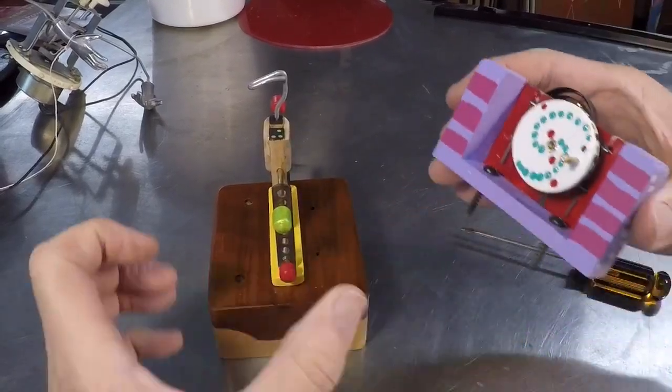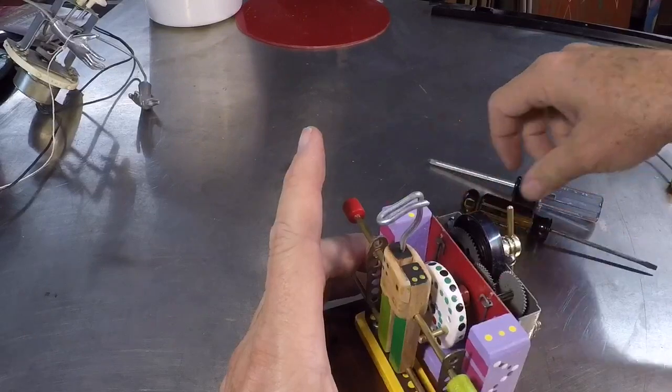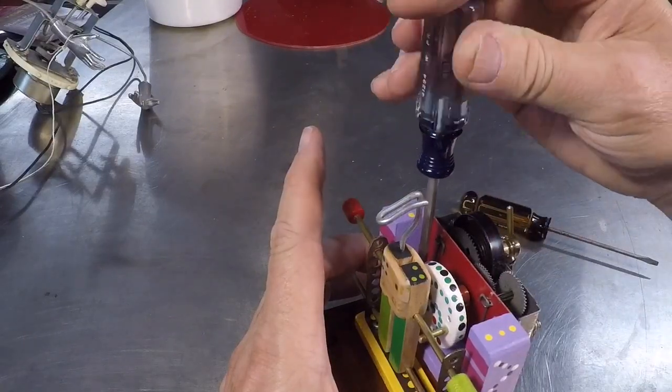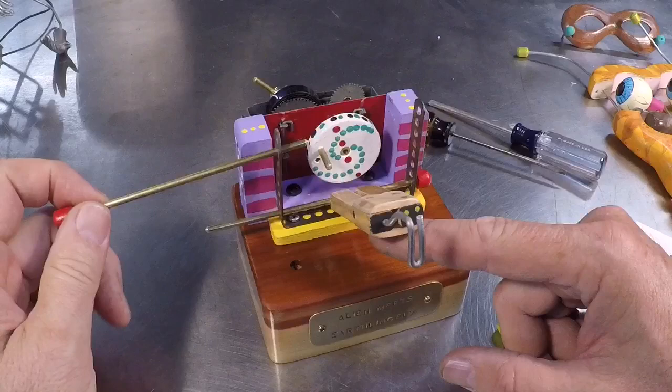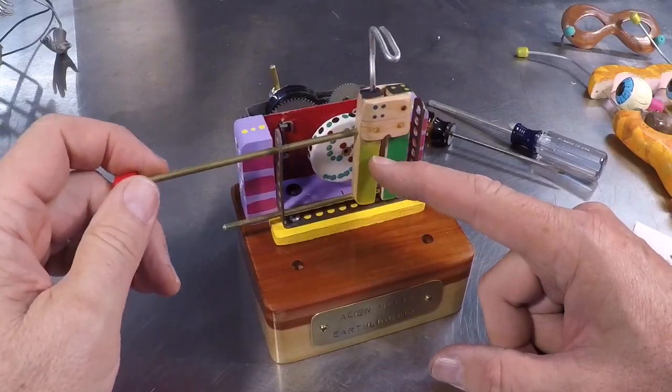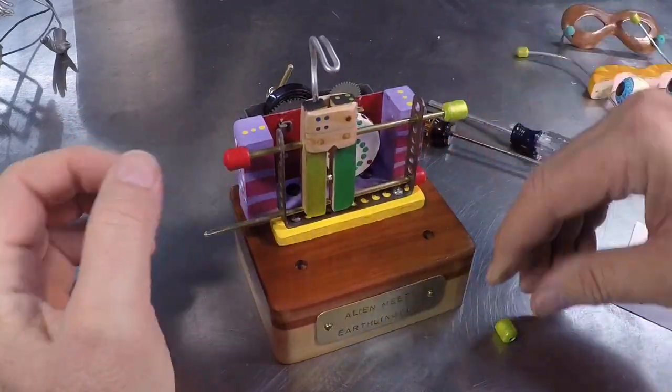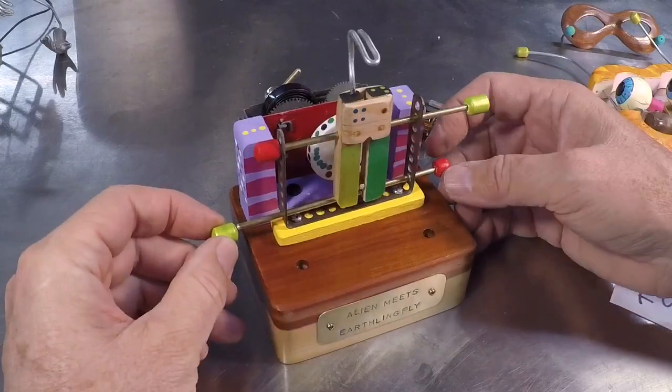So now we can go ahead and put our motor onto the base here. I've got these two brass rods - this is my way of getting the motion to go back and forth. There's any number of ways you could do this, and this is probably more complicated than it needs to be, but I think it looks kind of cool.